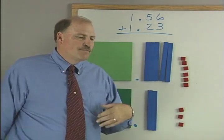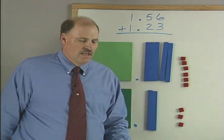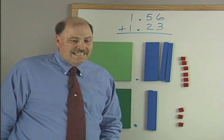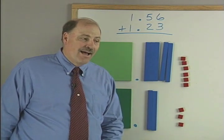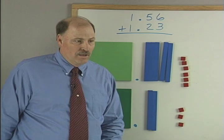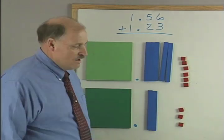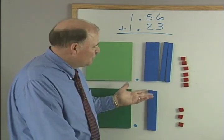Now oftentimes what books will tell you when you're doing this is, in order to add decimals, you have to line up the decimal point. What does that mean? Now with the blocks, you can see easily, which ones you're going to add?